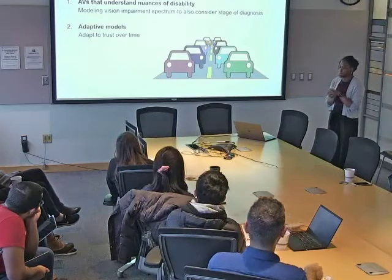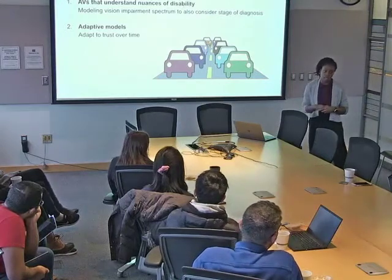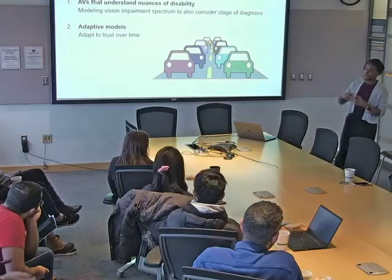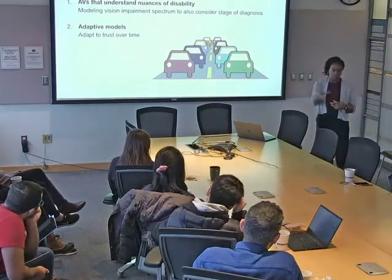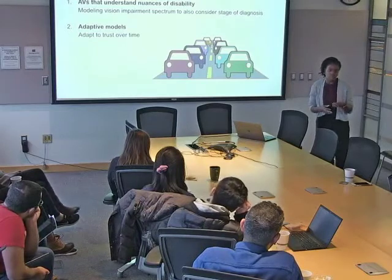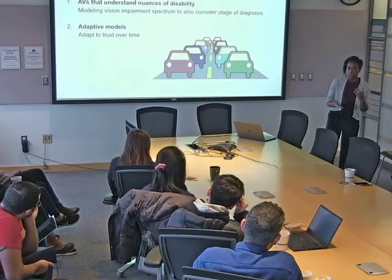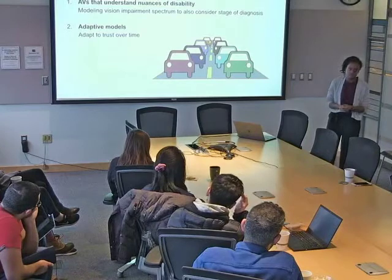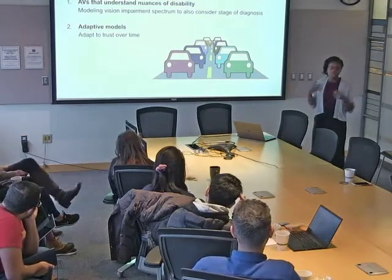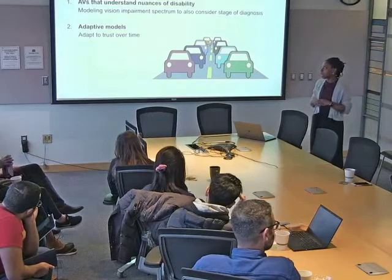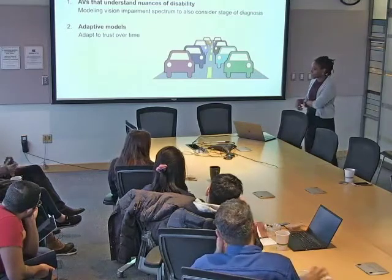What are the implications of this for the AI community? We need autonomous vehicle models that understand the nuances of disability — not only modeling the vision impairment spectrum from blind to low vision to sighted, but also when people were diagnosed with their impairment, which affects trust. We also need to think about trust over time, similar to the robotics literature on how people trust or distrust robots, and building models that can adapt to people's comfort levels over time.